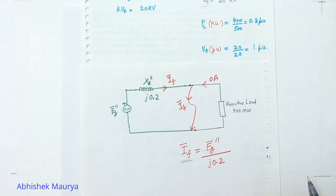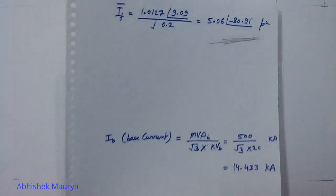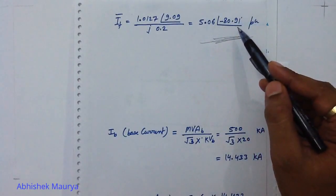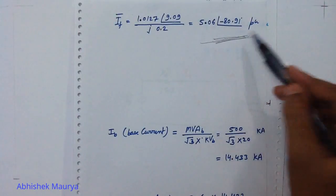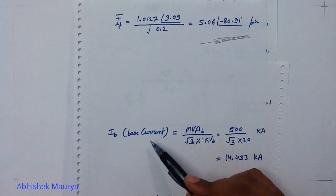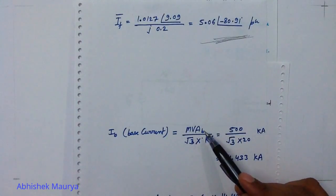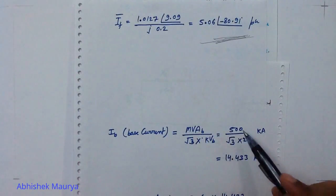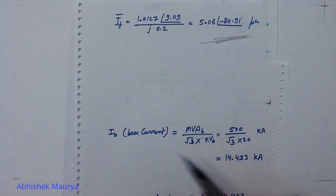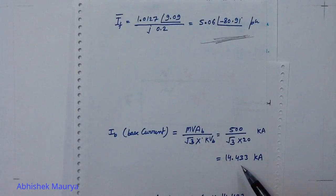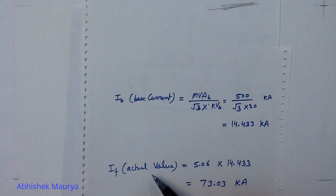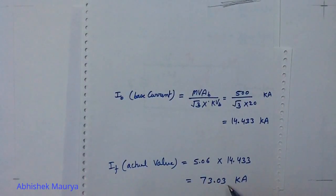Step 3: Calculate the fault current. Fault current IF equals Eg double-dash upon J0.2. After calculation you get 5.06 angle −80.91 degrees per unit. If the examiner asks for the actual fault current, calculate the base current: base current equals base power divided by (√3 × base voltage) = 500 MVA / (√3 × 20 kV) = 14.433 kilo-ampere. The actual fault current is then 73.03 kilo-ampere.